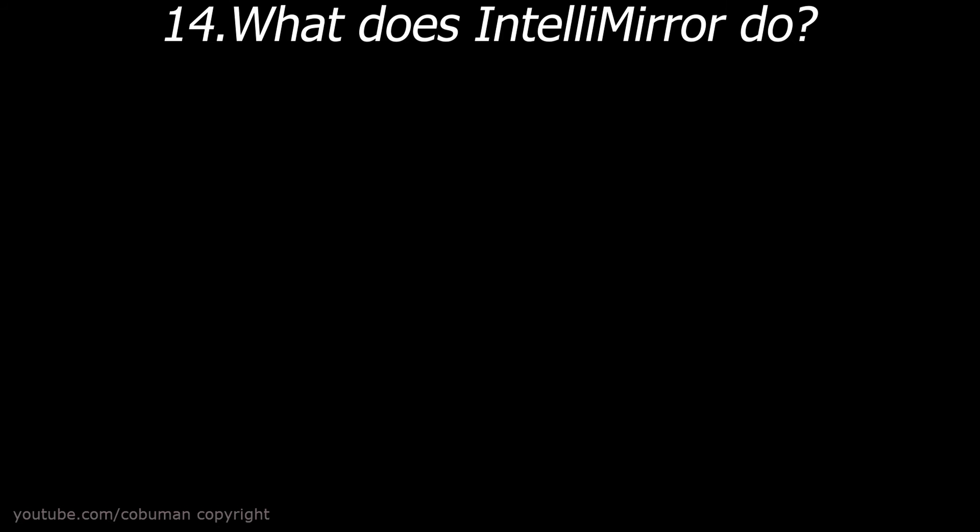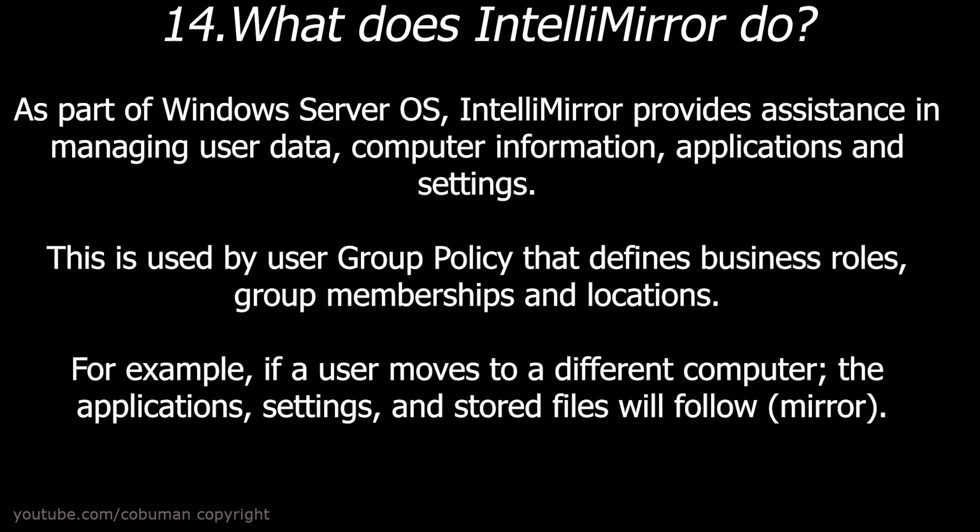Question number fourteen: What does IntelliMirror do? As part of the Windows Server operating system, IntelliMirror provides assistance in managing user data, computer information, applications, and settings. This is used by user group policy that defines business roles, group memberships, and locations. For example, if a user moves to a different computer, the application settings and stored files will follow.